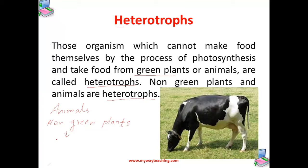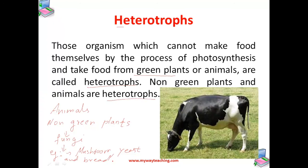Non-green plants come under the category of fungi. Some examples of fungi are mushroom — you must have all seen mushroom — then there is yeast, and bread mould. All these have heterotrophic mode of nutrition. Also, certain bacteria have heterotrophic mode of nutrition.